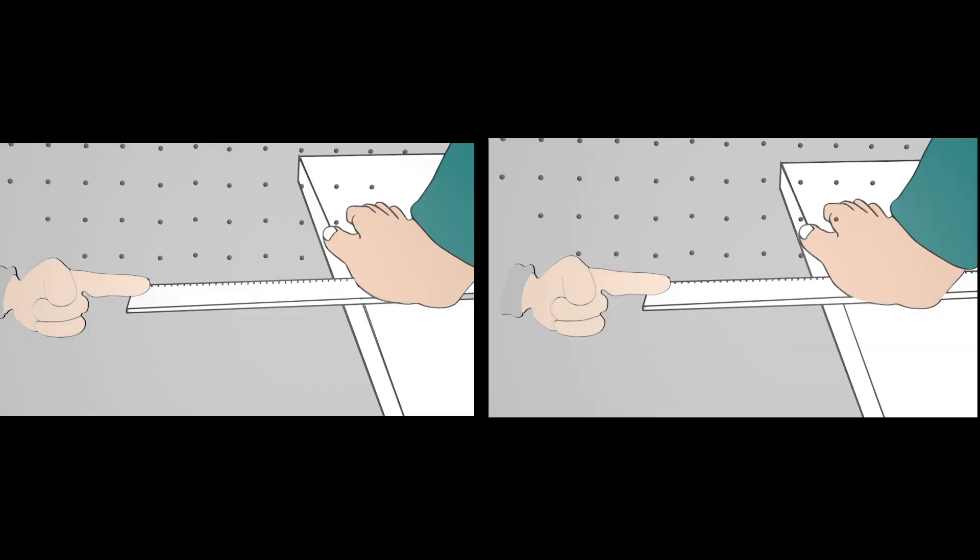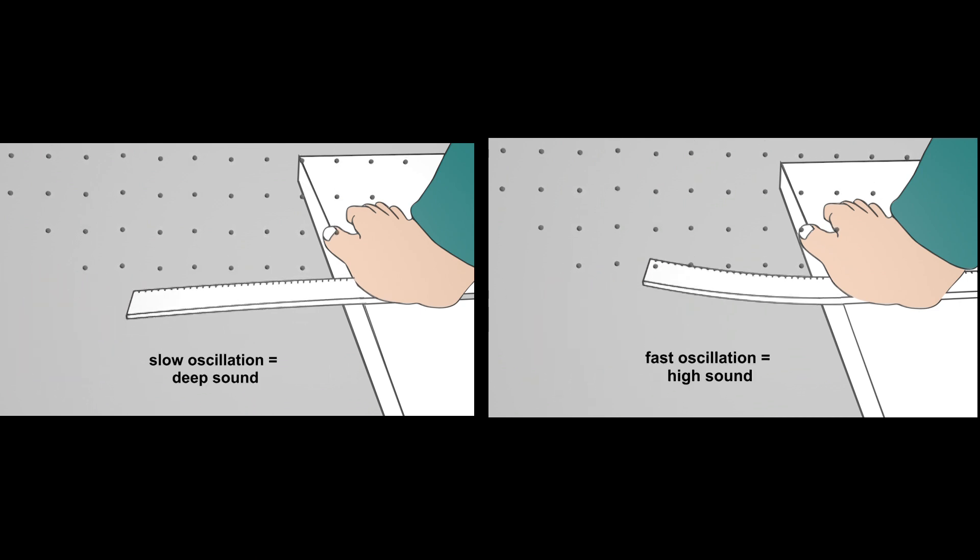Let's look at this again in direct comparison. You can clearly see that the ruler with the shorter overhang swings back and forth faster.